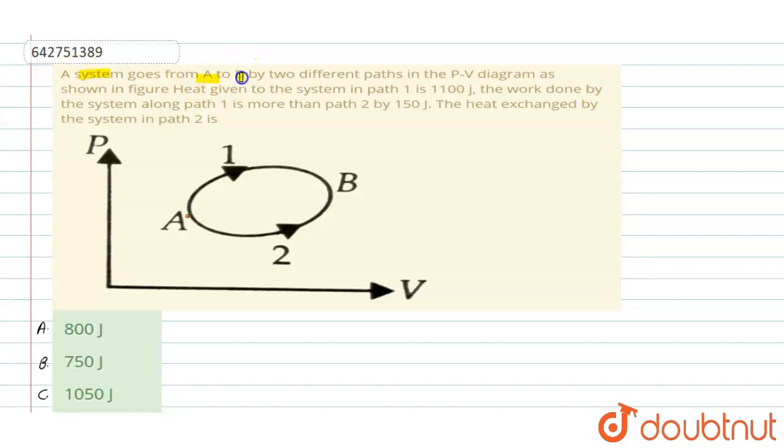A system goes from A to B by two different paths in a PV diagram as shown in the given figure. Heat given to the system in path 1 is 1100 joules. The work done by the system along path 1 is more than path 2 by 150 joules. The heat exchanged by the system in path 2 is what we need to find.